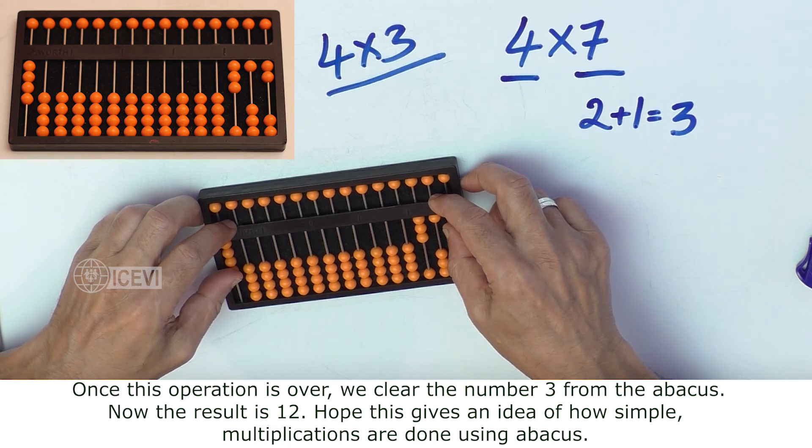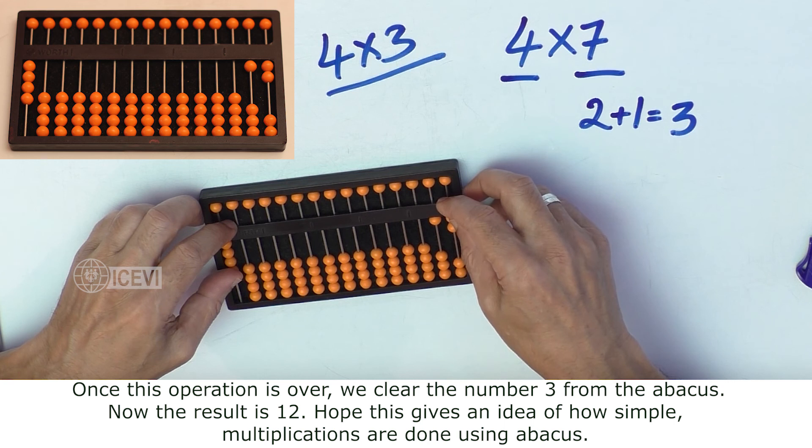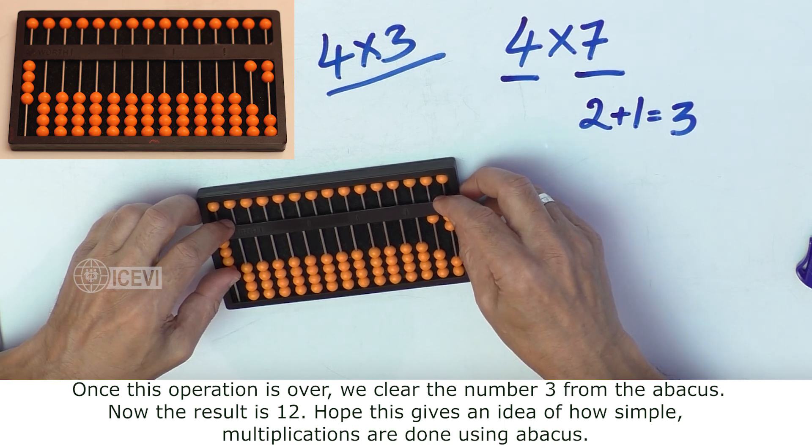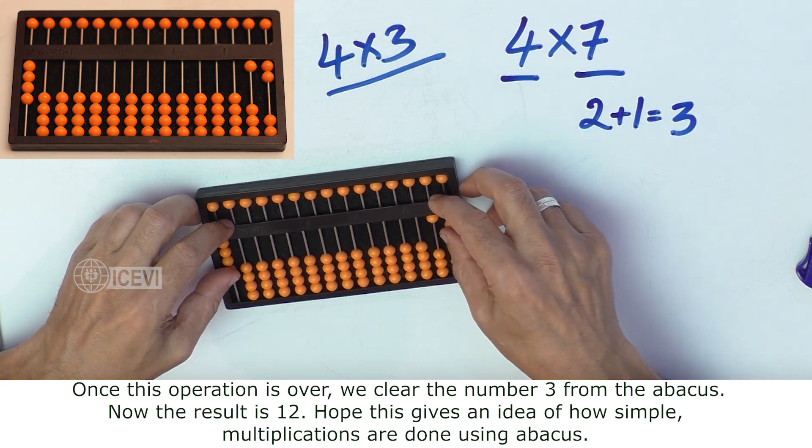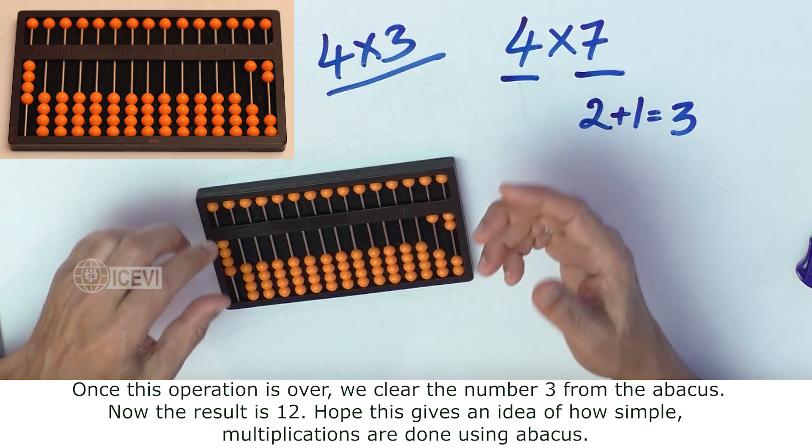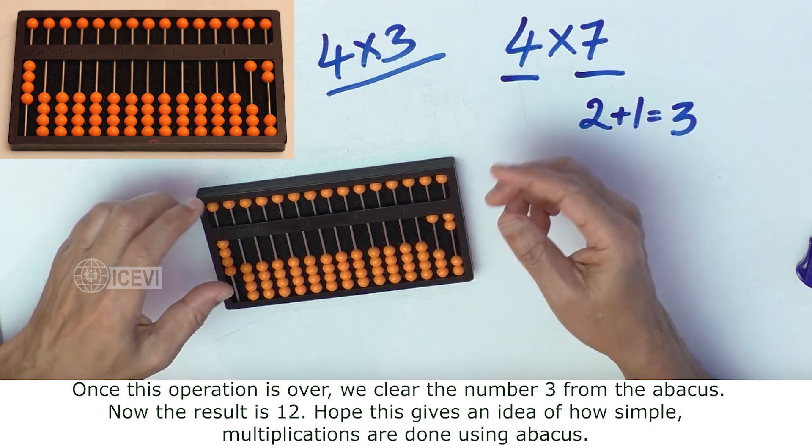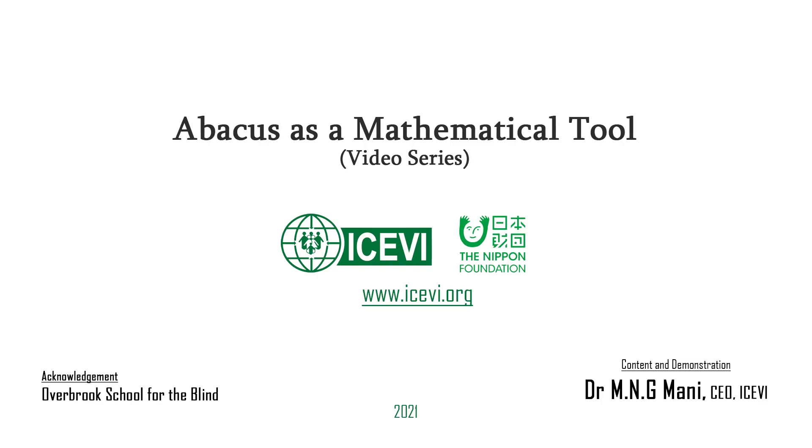Now that the multiplication process is over, we have to clear the number 3, which is the multiplicand, from the abacus. Now, the result is 12. Hope this gives an idea of how simple multiplications are when done using abacus.